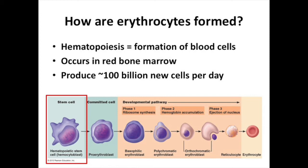How does our body make new erythrocytes? The broad term hematopoiesis refers to the making of any blood cell — red, white, or platelet. The more specific term erythropoiesis refers to making new red blood cells. This happens in the red bone marrow — throughout your bones if you're young, or more condensed in the ends of bones or sternum if you're older. The body is capable of producing over 100 billion new cells a day, mostly because erythrocytes don't last very long.